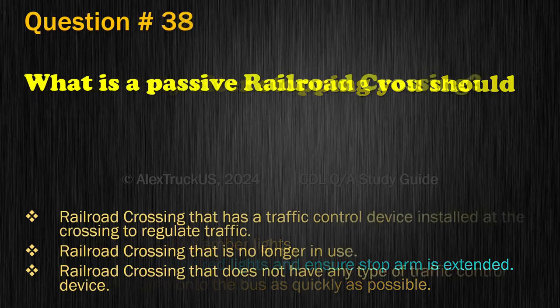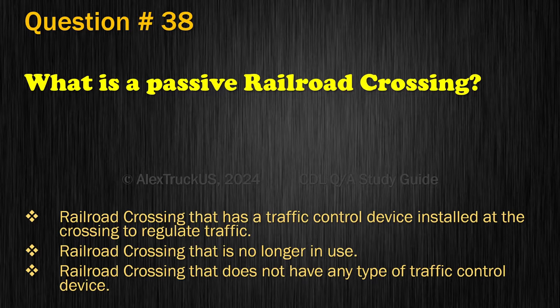Question 38. What is a passive railroad crossing? A railroad crossing that has a traffic control device installed at the crossing to regulate traffic; A railroad crossing that is no longer in use; or A railroad crossing that does not have any type of traffic control device. The correct answer is: A railroad crossing that does not have any type of traffic control device.